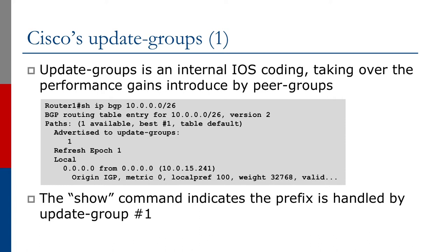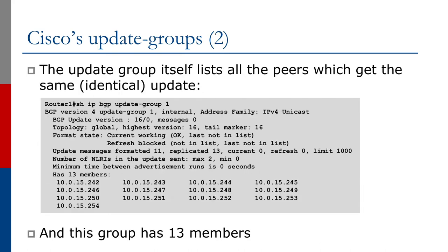Update groups are an internal IOS coding feature that takes over the performance gains introduced by peer groups. The software configuration works out which neighbors share the same outbound policy and groups them all together. You can find out the status of the update groups on an IBGP-speaking router by looking at the prefix in the BGP table. You can also list all the peers belonging to a particular update group — a router may have a few update groups, and you can list them all by group number to see which neighbors are members of each group.